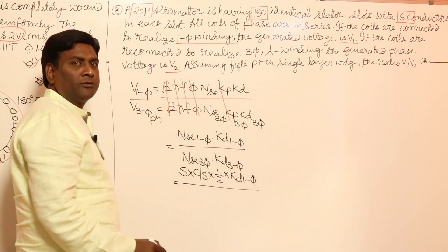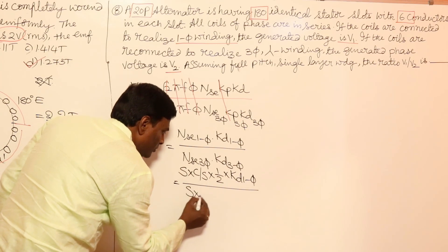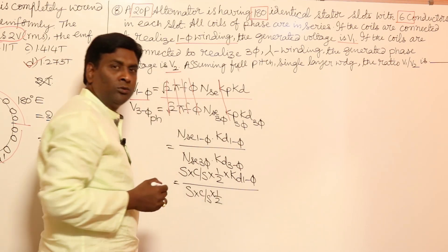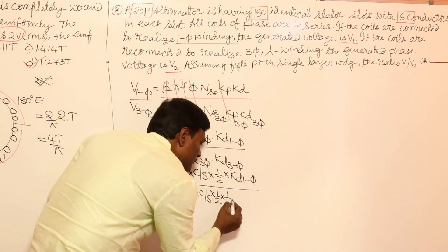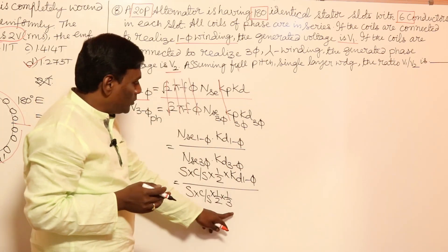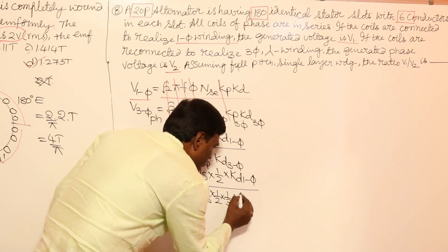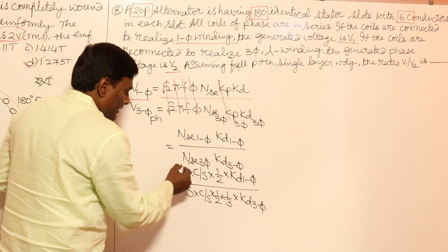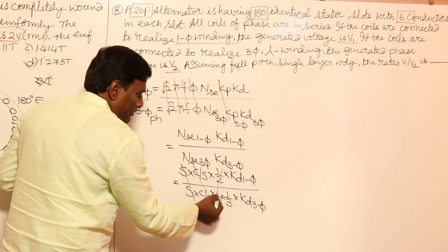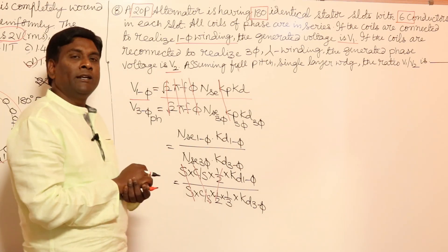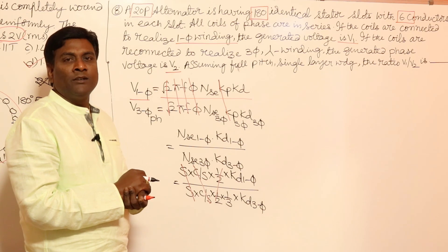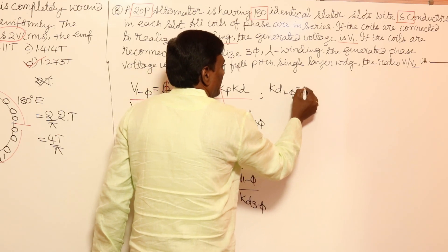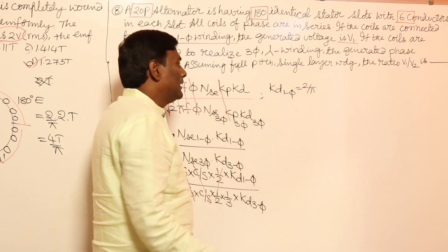For three phase, the total number of turns is the same (total slots × conductors per slot ÷ 2), but distributed among three phases, so per phase it is 1/3 of the total. The slots and conductors cancel, as do the 1/2 factors. The distribution factor for single phase is kd(1φ) = 2/π, as calculated previously.